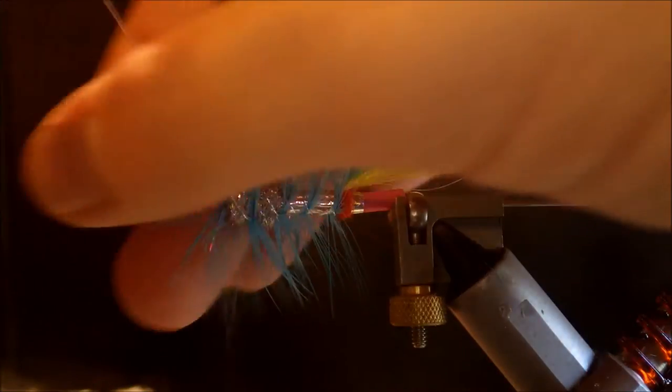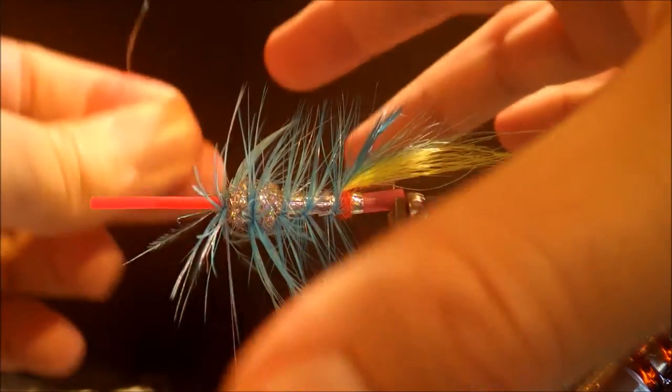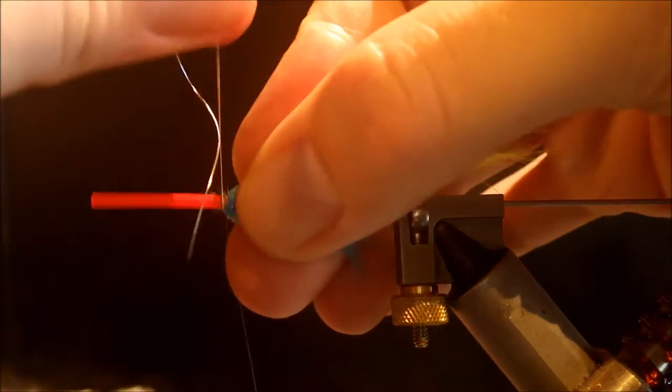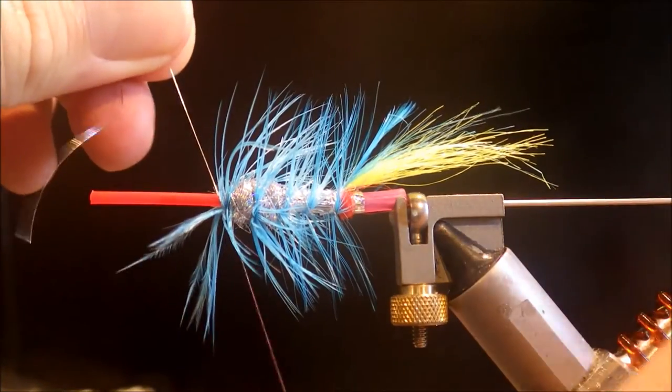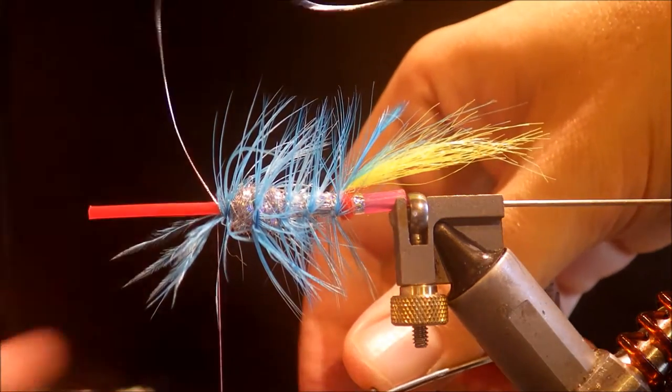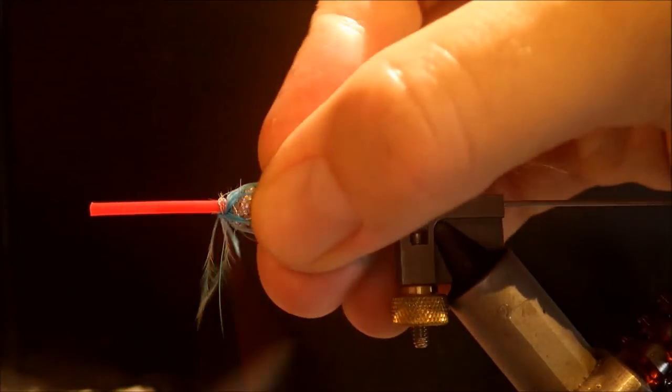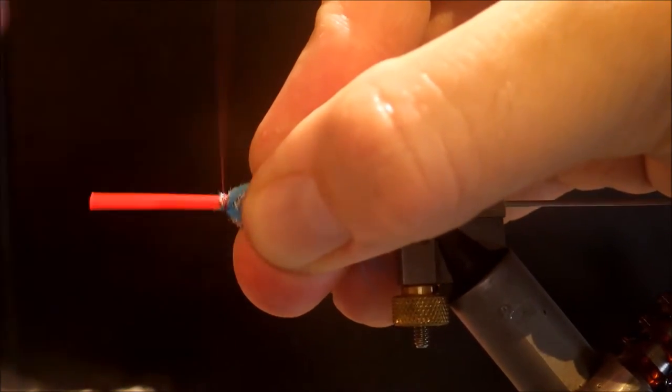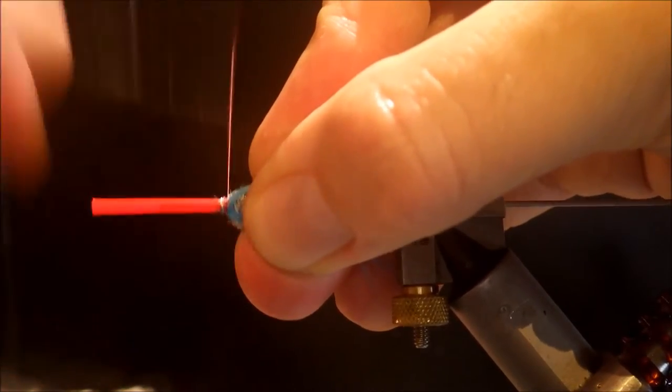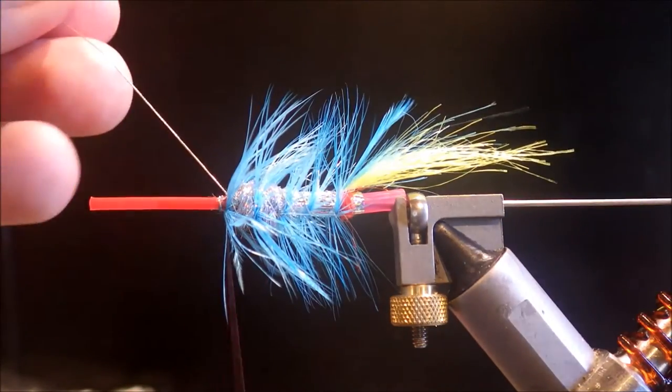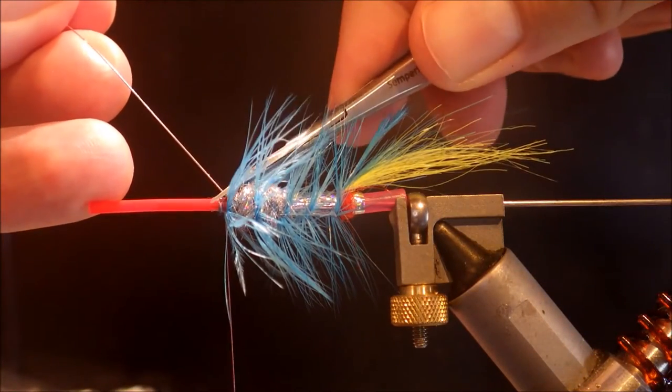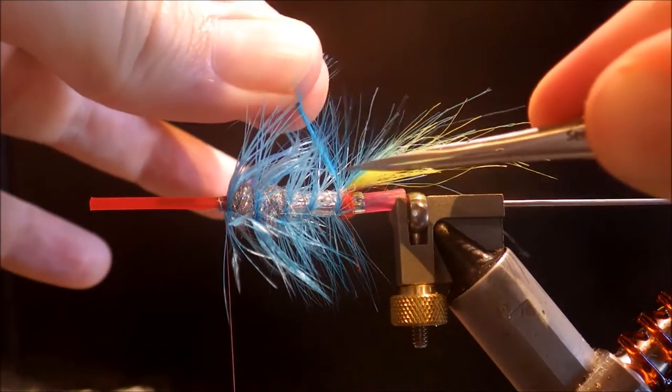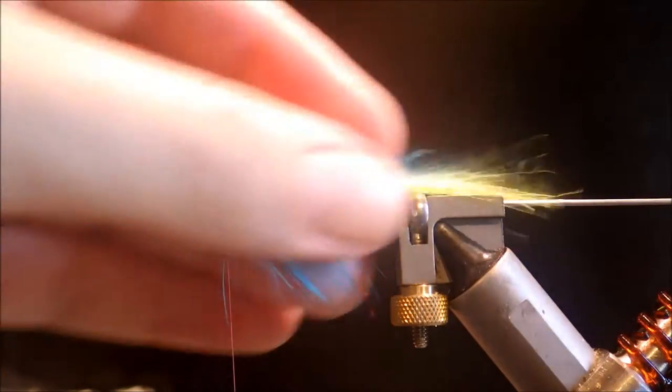Once you reach the tail, you can cross over the hackle with your rib. And then just wind your rib through the hackle. Make sure you don't trap too many fibers. Cross over, fold that back again. Anything going forward, just draw it back and tidy up. Take away the hackle.